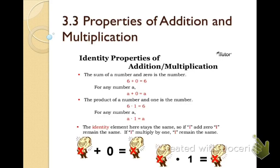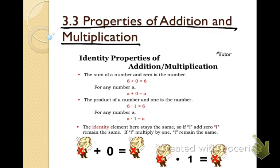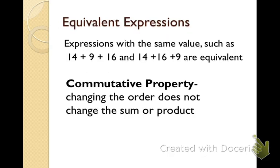We're starting Section 3.3 of Chapter 3, which is Properties of Addition and Multiplication. Write this down in your notebook — just the title: 3.3, Properties of Addition and Multiplication. This presentation will take you step by step through what that means with some examples. Don't forget you can pause the video along the way and continue when you are ready to move on.